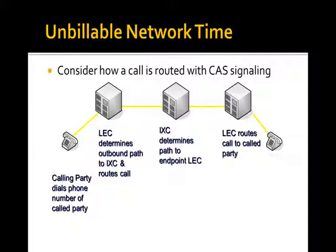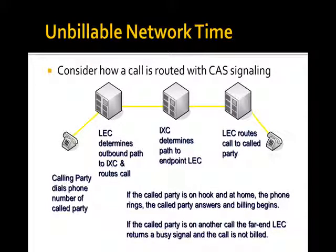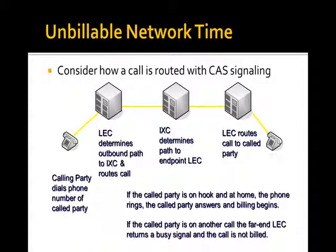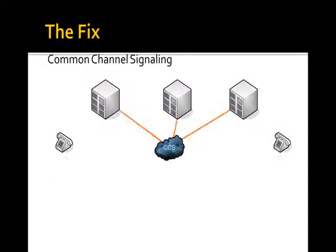Think about the size of the AT&T network and the amount of revenue when you're charging for the use of a network by the second or by the quarter minute or by the minute. That's an awful lot of revenue. By the way, if I called and you weren't home, I heard your ring signal — and what I heard actually came across the network. They fixed that later. The problem in all of these cases is that with channel-associated signaling, I had to build this entire path even if the call couldn't be delivered.